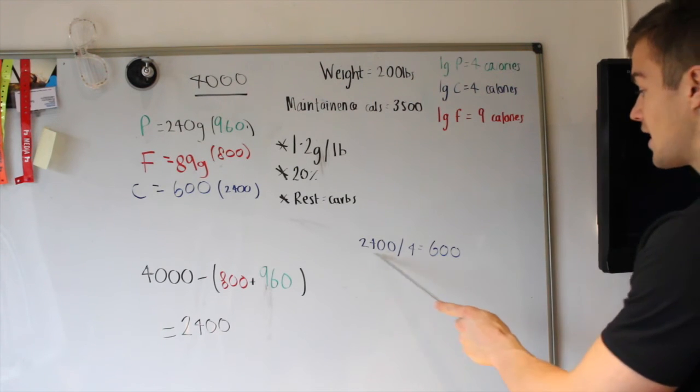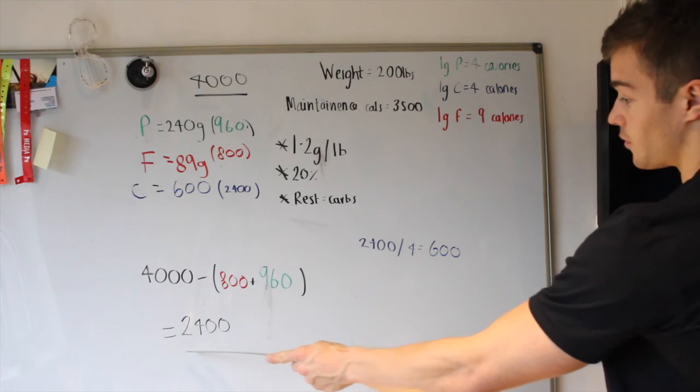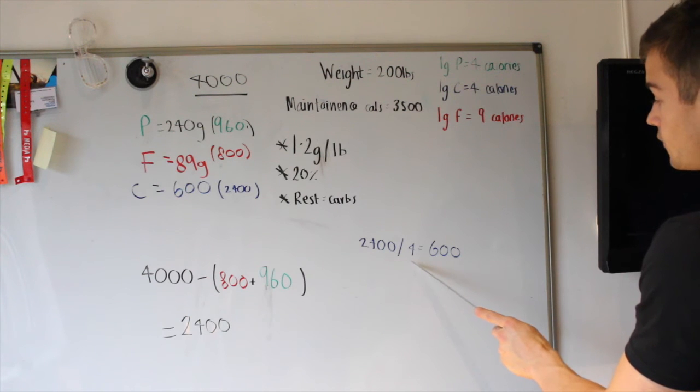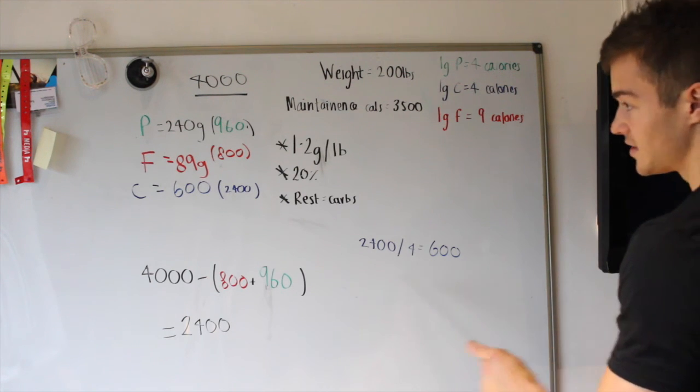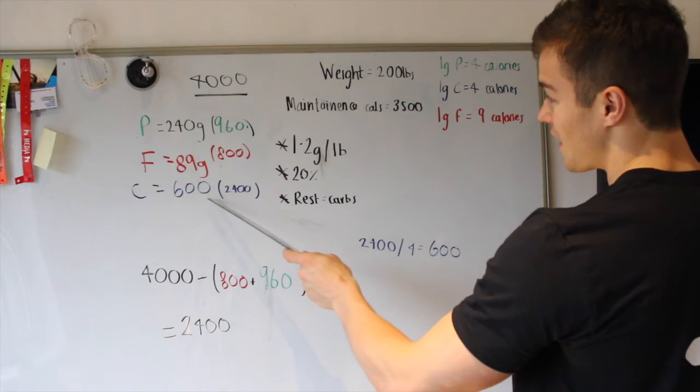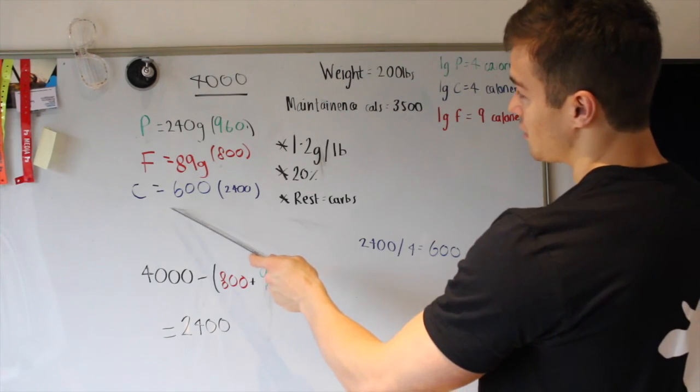What we're going to do is we're going to get our total amount of calories that we're allowed from our carbohydrates. 2,400 divided by 4 equals 600 grams. So, 600 grams of carbohydrates is what we're going to be on.